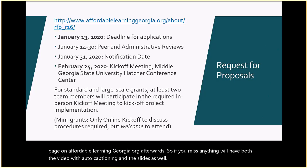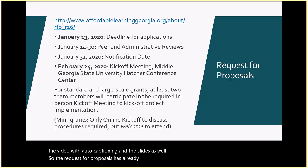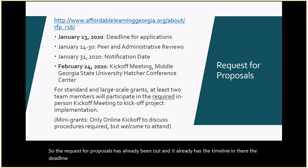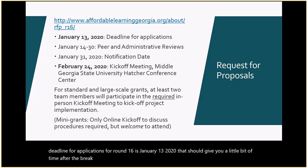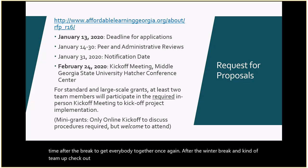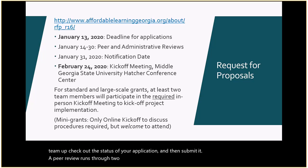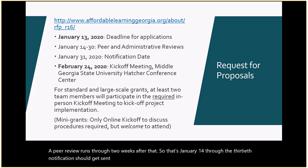The request for proposals has already been out and it has the timeline in it. The deadline for applications for Round 16 is January 13, 2020. That should give you a little bit of time after the winter break to get everybody together, team up, check out the status of your application, and then submit it. Peer review runs January 14 through the 30th. Notifications should get sent out on January 31, after administrative reviews end.